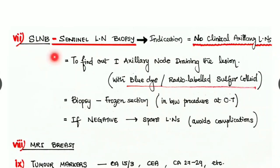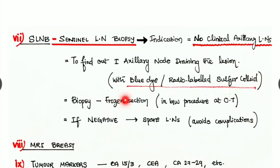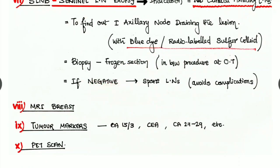Seventh one is sentinel lymph node biopsy. The indication is there is no clinically detectable axillary lymph nodes. We are using it to find out the first axillary node draining the lesion, and here we are using a blue dye, mostly methylene blue, and/or a radio label, mostly technetium-labeled sulfur colloid. The biopsy we are taking as frozen section biopsy which is done in between the procedure at the operation theater. If the biopsy is negative, then we are sparing the lymph nodes, we are not removing them, and thus we are able to avoid many complications, mainly lymphoedema in the upper limb.